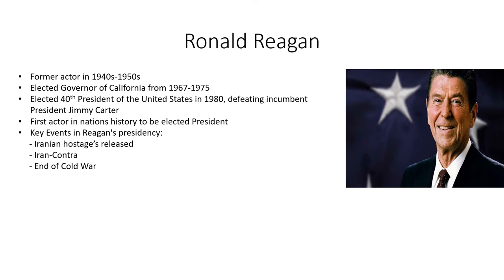Ronald Reagan was the 40th president of the United States. He was elected in 1980, defeating President Jimmy Carter. Reagan was a former actor whose movies and television programs were set mostly in the 1940s and 1950s. During World War II he made training films for the military and pro-American war bond movies. He was elected governor of California, serving from 1967 to 1975 during one of the most turbulent times in California's history, including riots after the assassination of Dr. Martin Luther King in 1968. He has the distinction of being the first actor in the nation's history to be elected president.